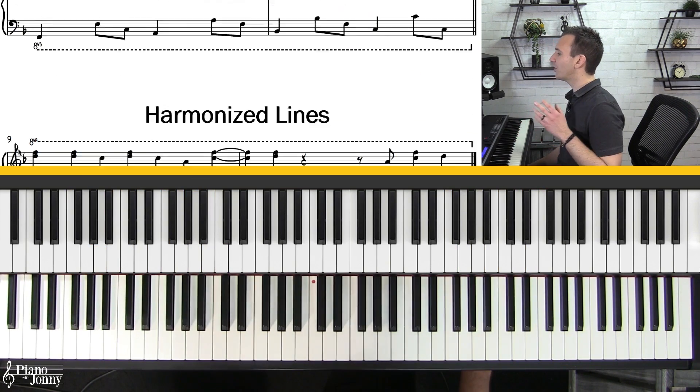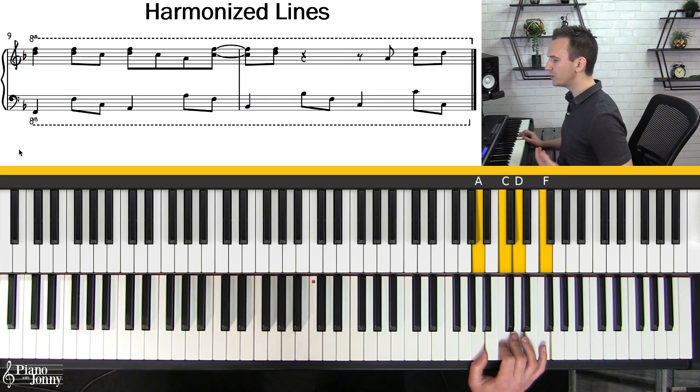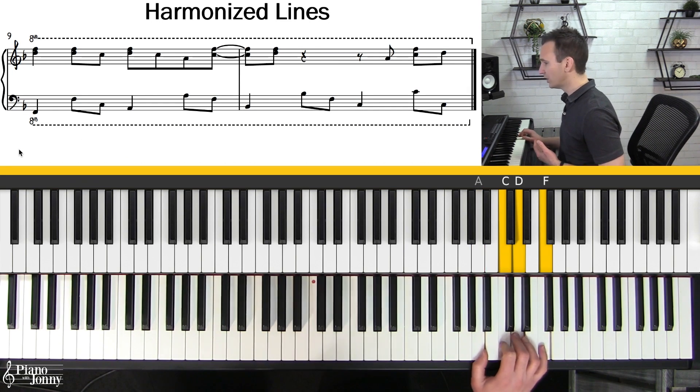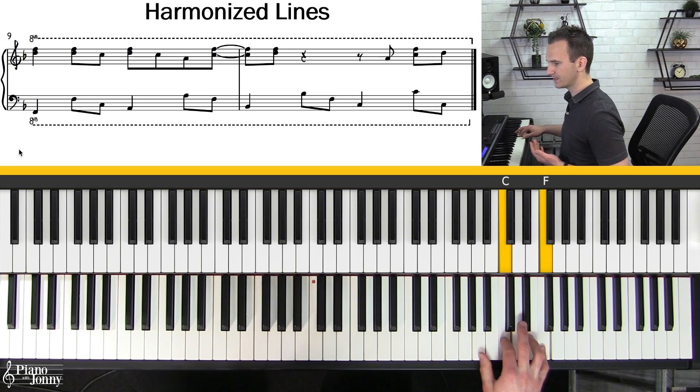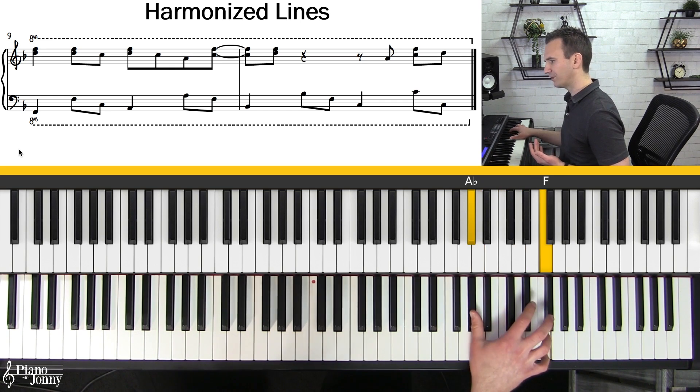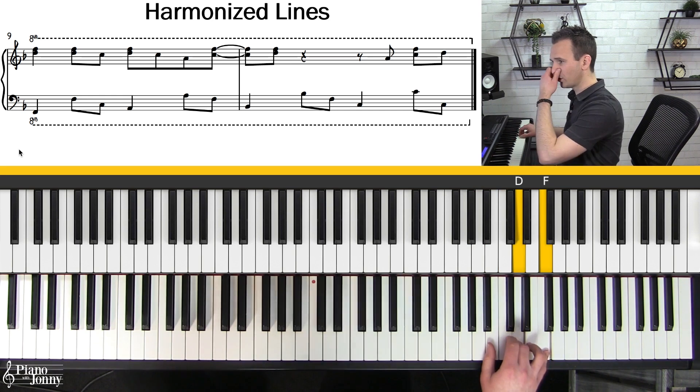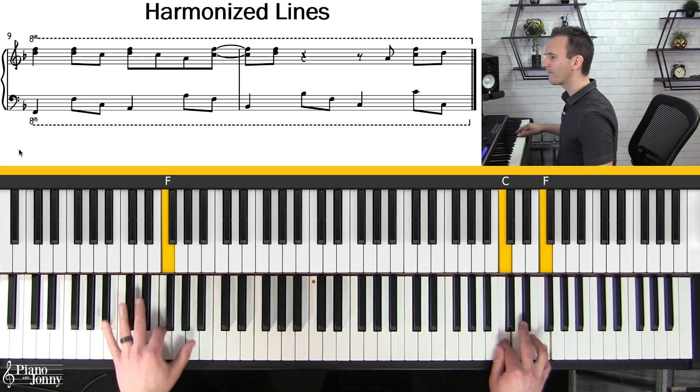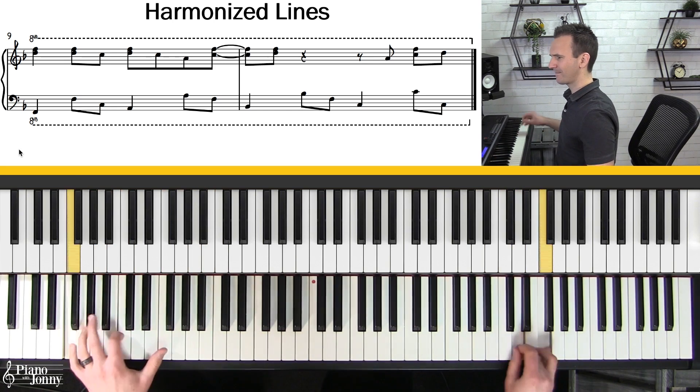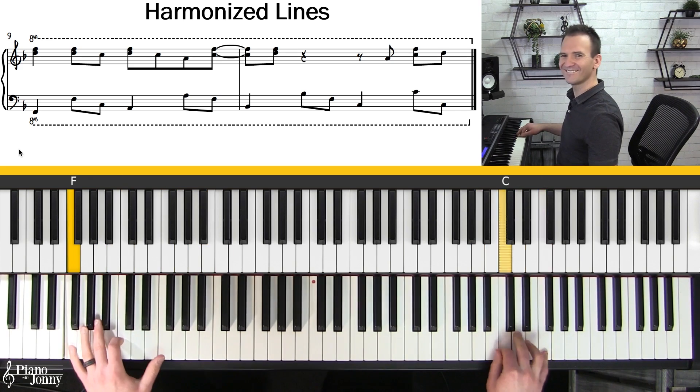I want to move on and talk about the harmonized line technique and it's the same thing we did earlier, we're just going to do it in this upper position. With this idea, basically I can just harmonize any notes from this scale. You can actually even put the A flat down there and create some really cool sounding lines.